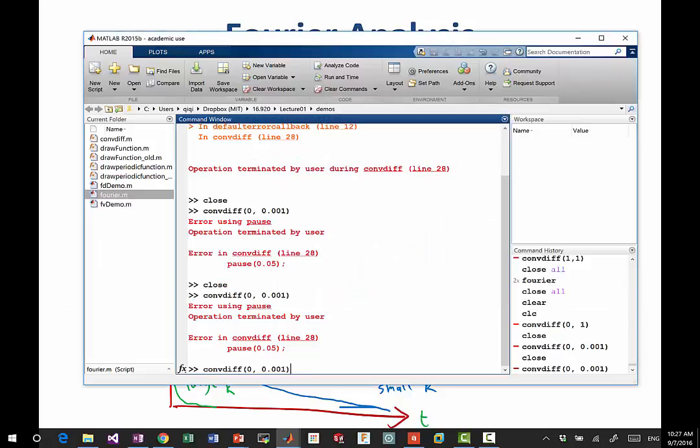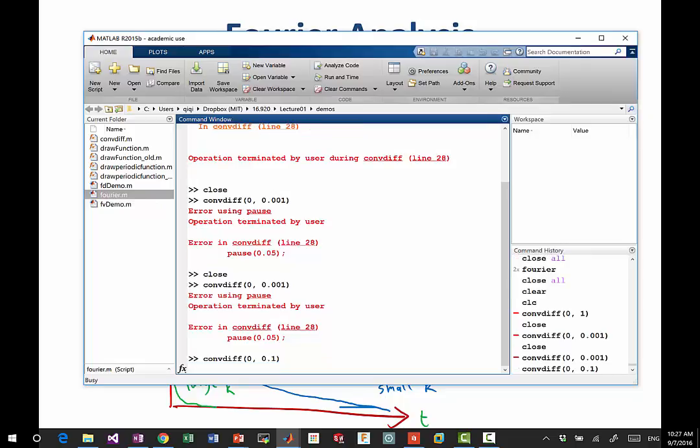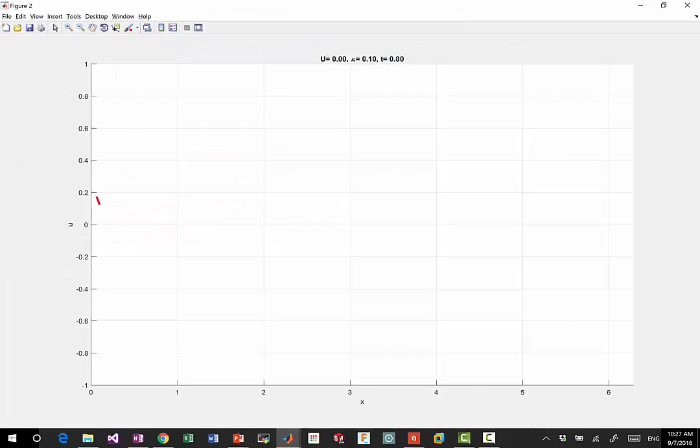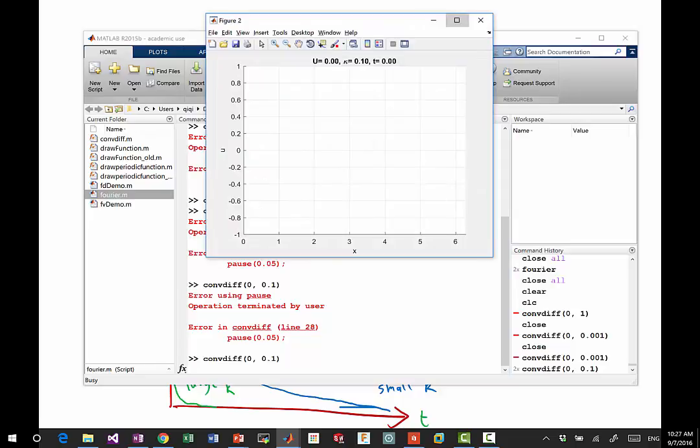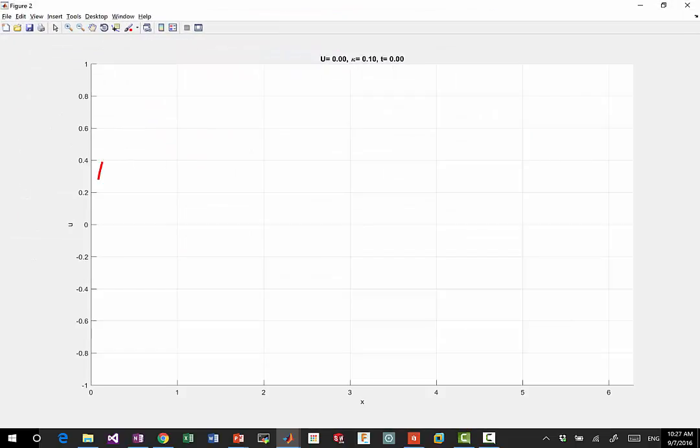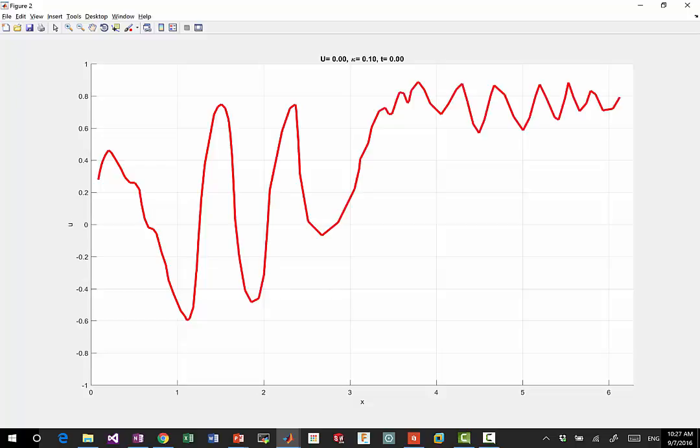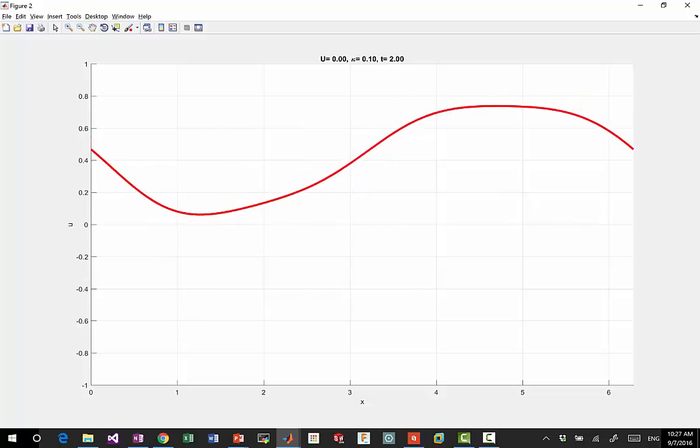So let's draw this case. Even if I draw a very jaggy case, the solution decays and you can see different components decay at different rates. The very jaggy components decay very fast, and the relatively smooth components decay very slowly.